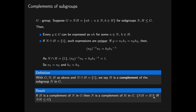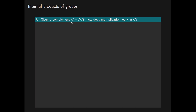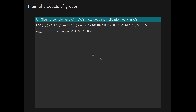Armed with this information, we can ask the following question. Given a complement G equals NH, how does multiplication work in our group G? We have that for any two elements G1 and G2 of our group G, G1 and G2 have these unique decompositions in terms of elements of N and elements of H. And the product G1·G2 will also have a decomposition N'H' for a unique element N' in N and H' in H. So the question is: can we determine what these N' and H' are?